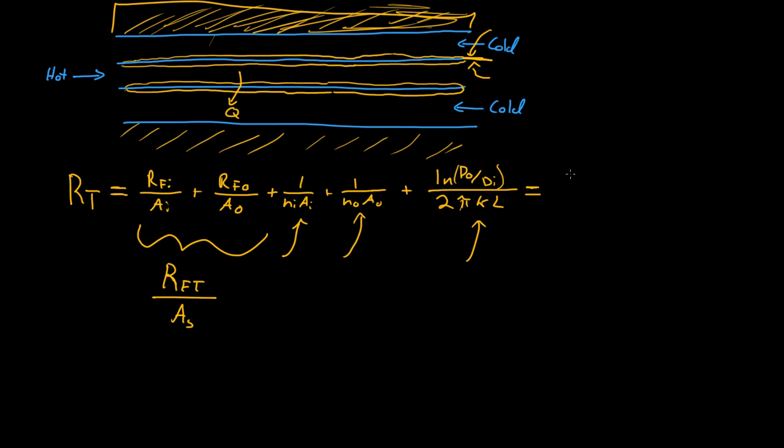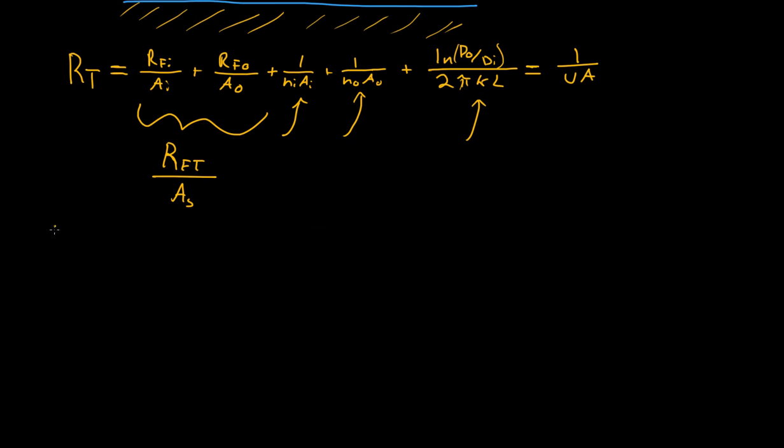RT is actually equal to 1 over U times A, where U is the overall heat transfer unit. It's a combination of H and H naught - it's all of these added together. When you have 1 over UA, it's the combination of everything, so it's the total heat transfer unit. It's the same idea as H and K.